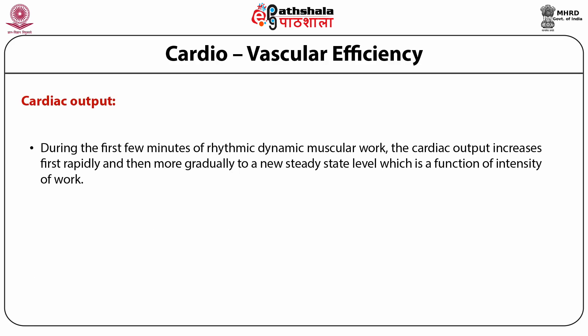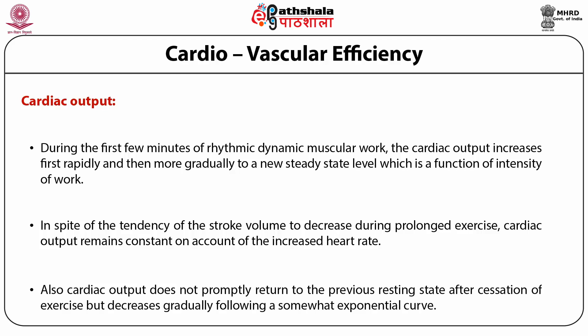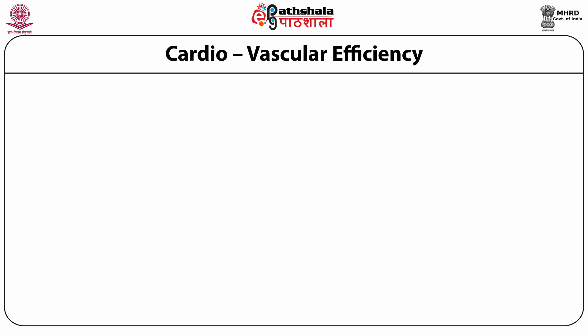During the first few minutes of rhythmic dynamic muscular work, cardiac output increases rapidly then more gradually to a new steady-state level, which is a function of work intensity. Despite a tendency for stroke volume to decrease during prolonged exercise, cardiac output remains constant due to an increased heart rate. Cardiac output does not rapidly return to resting state after stopping exercise but decreases gradually following an exponential curve.